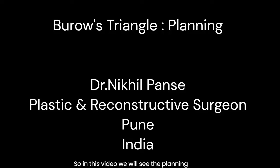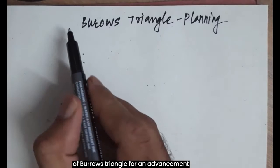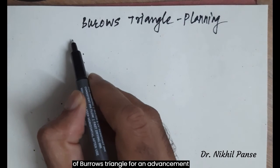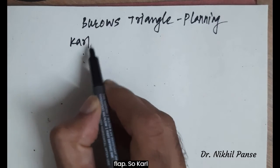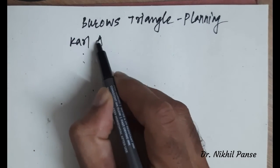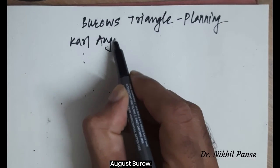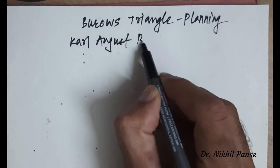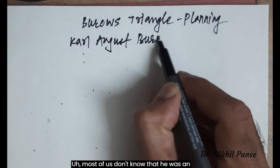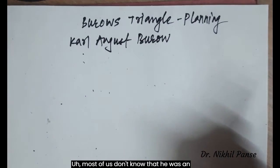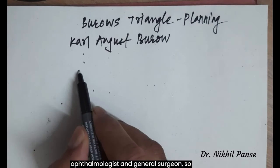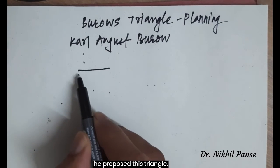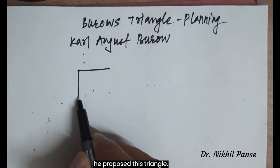In this video, we will see the planning of Burroughs triangle for an advancement flap. Karl August Burroughs — most of us won't know that he was an ophthalmologist and a general surgeon — proposed this Burroughs triangle.